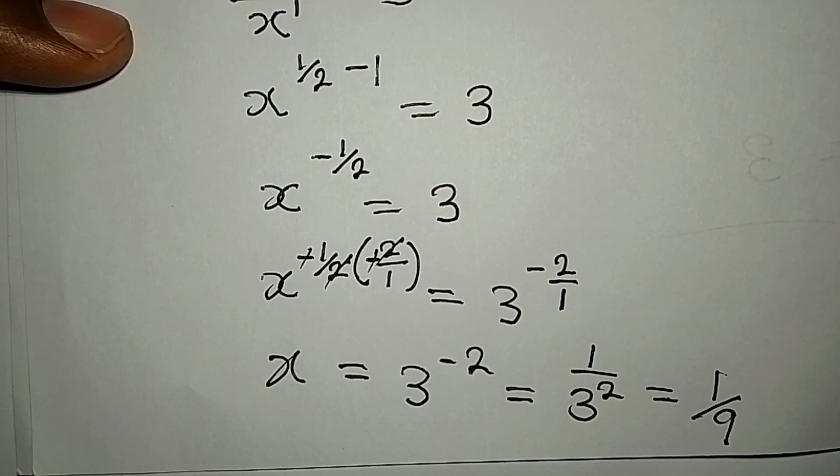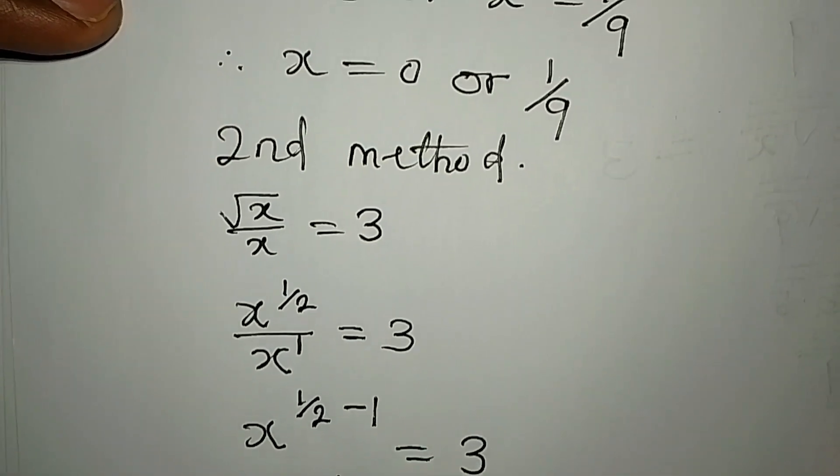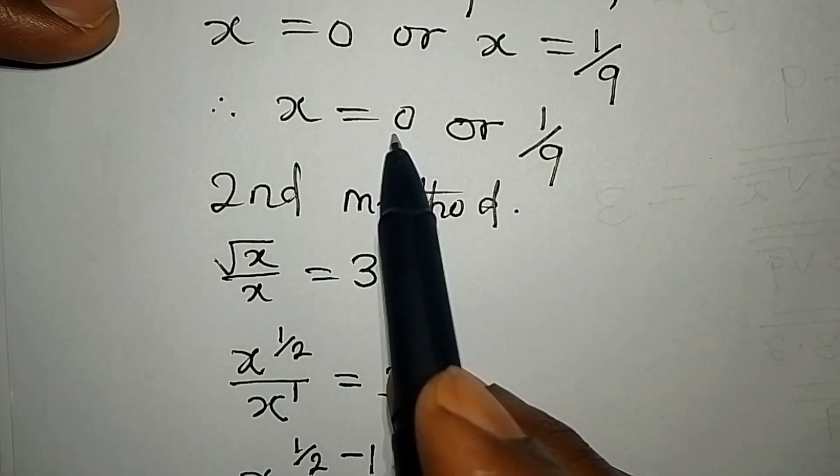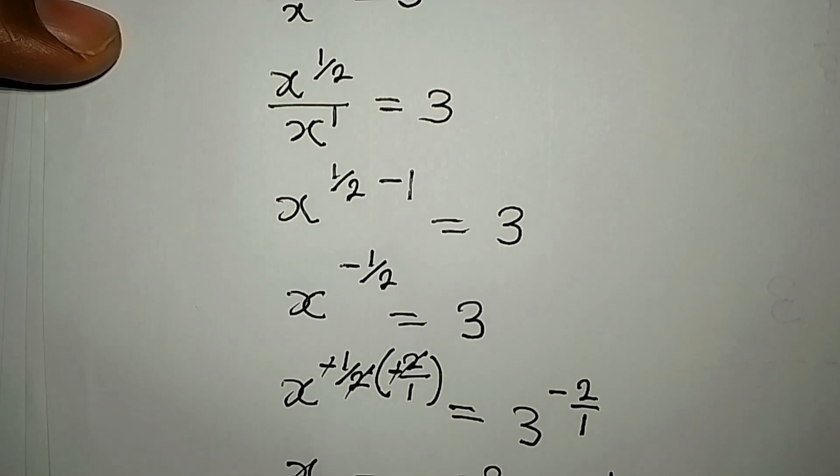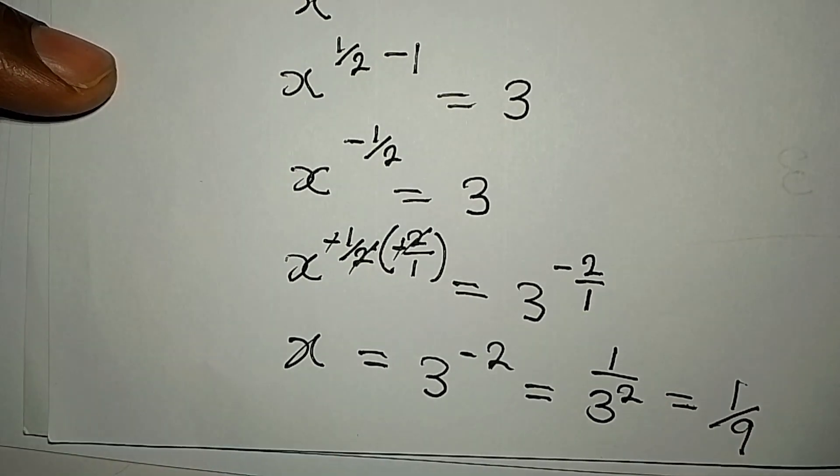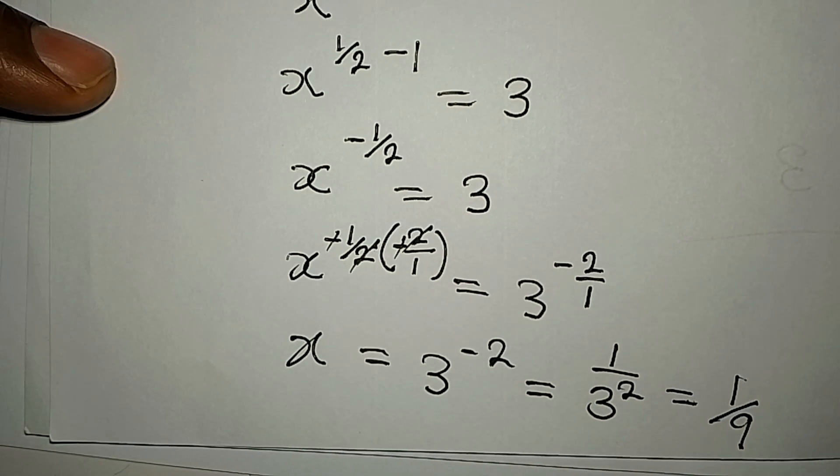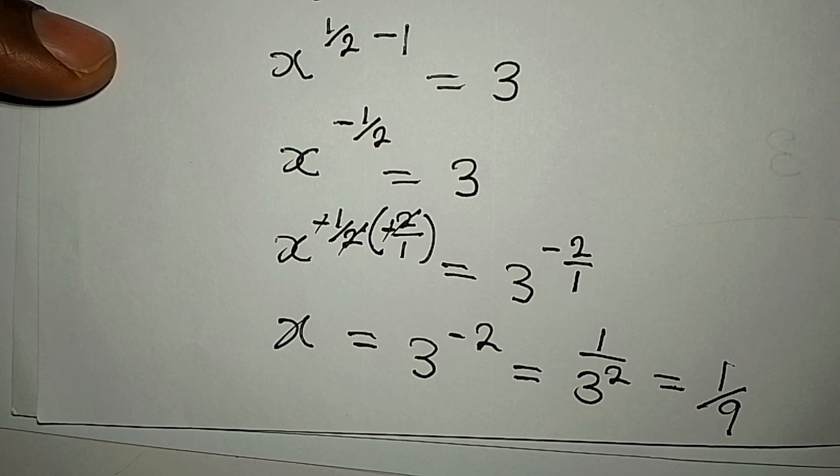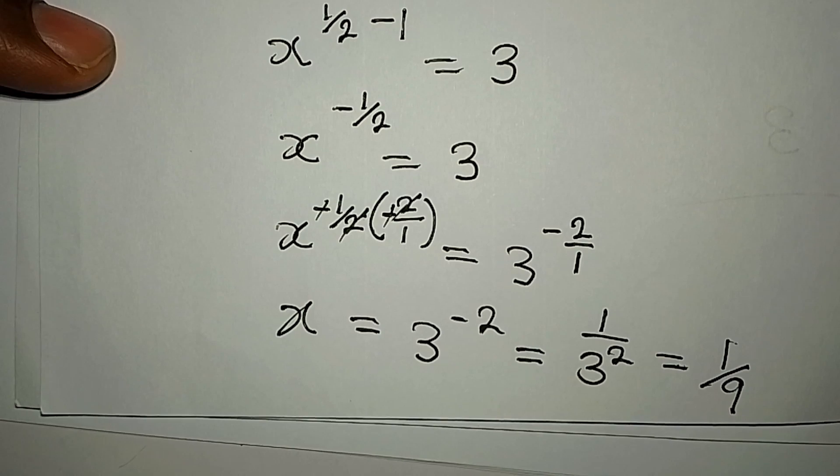We had x to be equal to zero or one over nine. From the second method we got just one solution, and that is x equal to one over nine. So I think we can say that the first method is more appropriate as it gives us the two solutions.